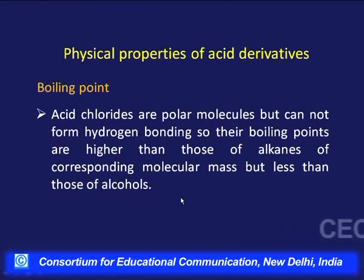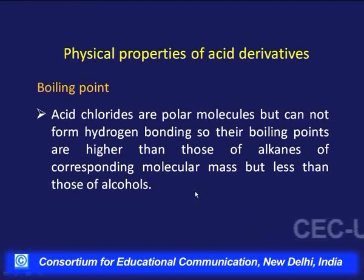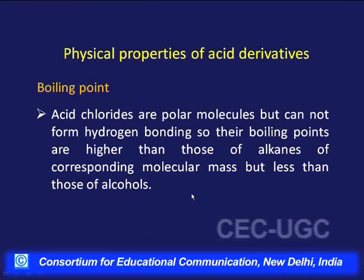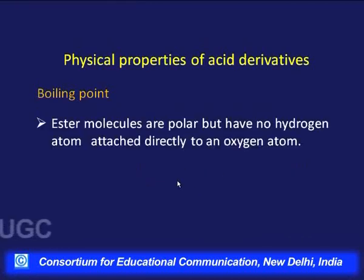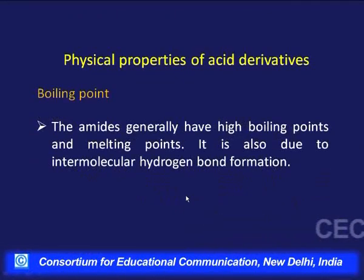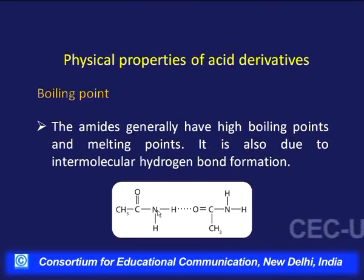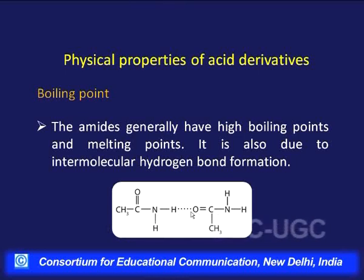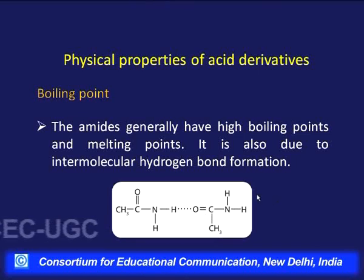Regarding boiling points: acid chlorides are polar but cannot form hydrogen bonds, so their boiling points are higher than alkanes of corresponding molecular mass but lower than corresponding alcohols. Ester molecules are polar but also cannot form hydrogen bonds, giving them relatively lower boiling points than alcohols or carboxylic acids. Amides generally have high boiling points and melting points due to intermolecular hydrogen bonding between the N–H and the carbonyl oxygen.